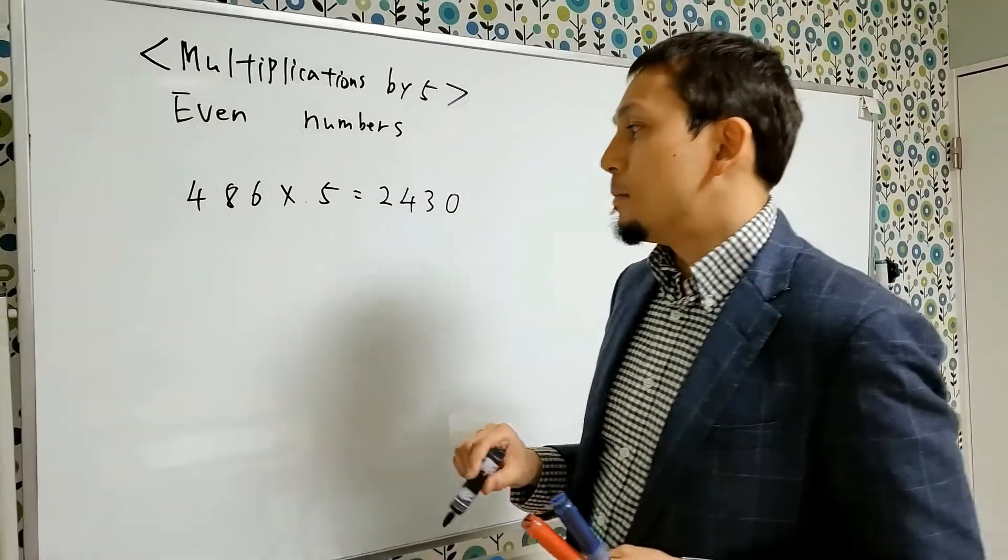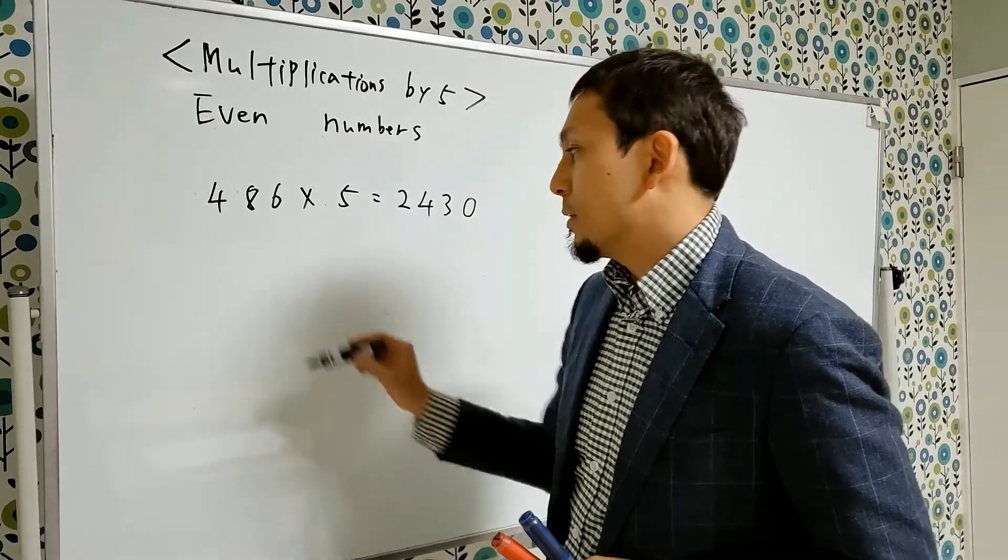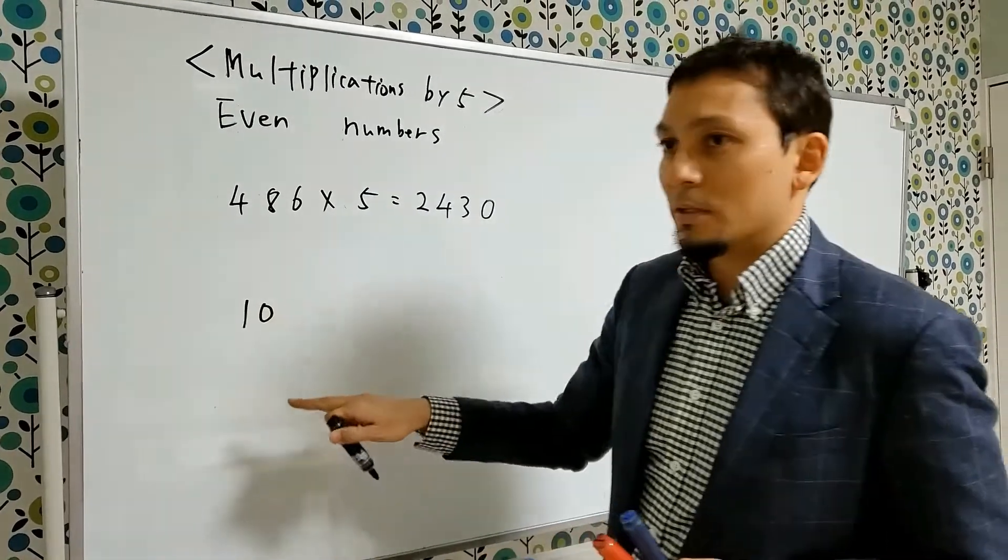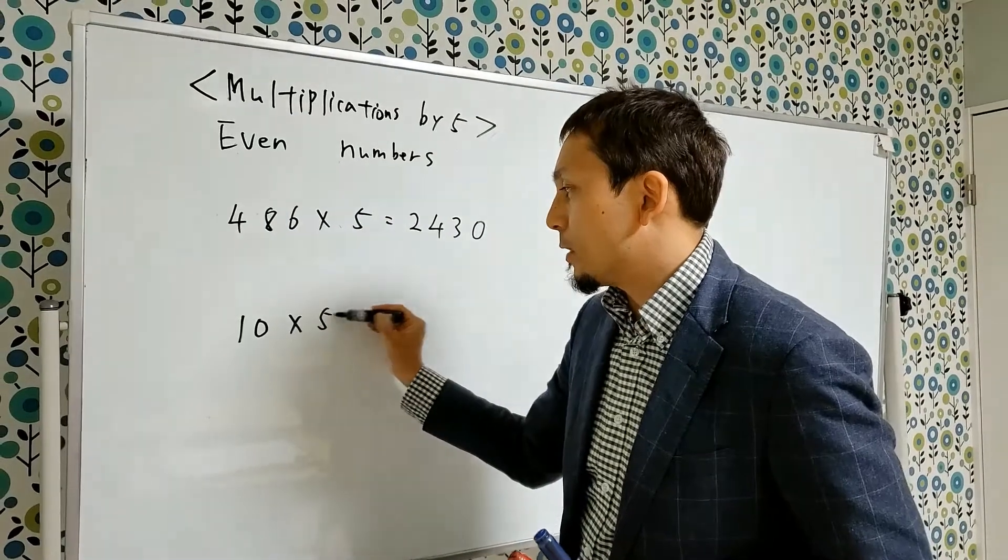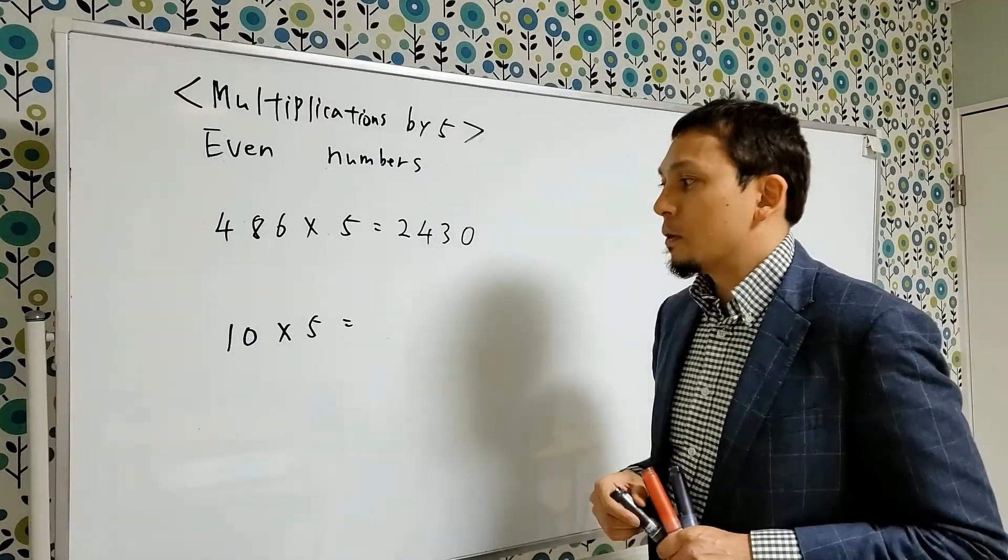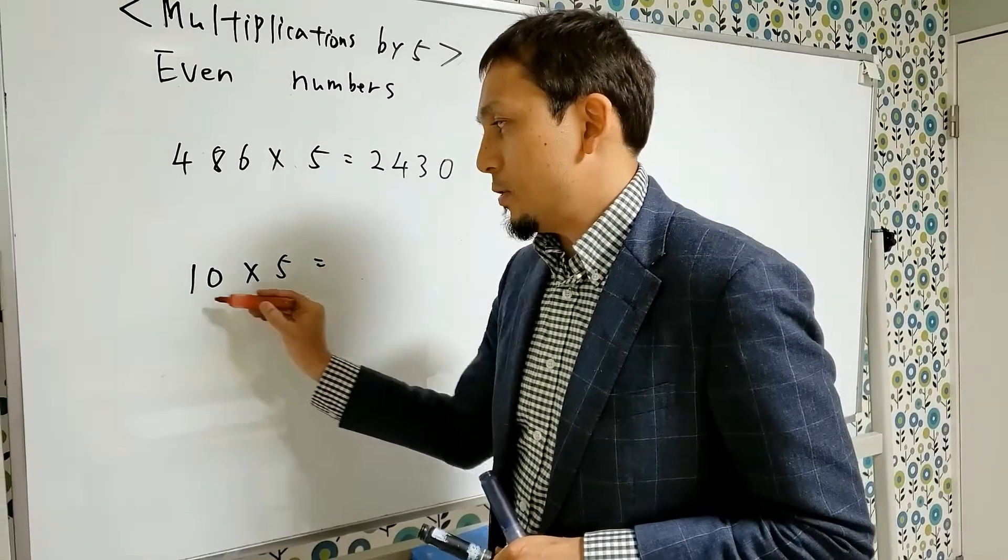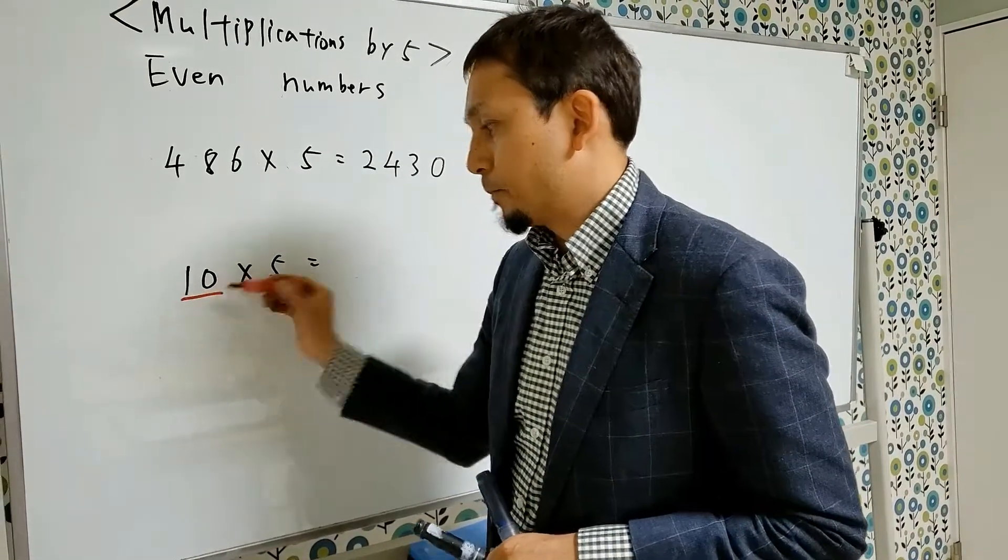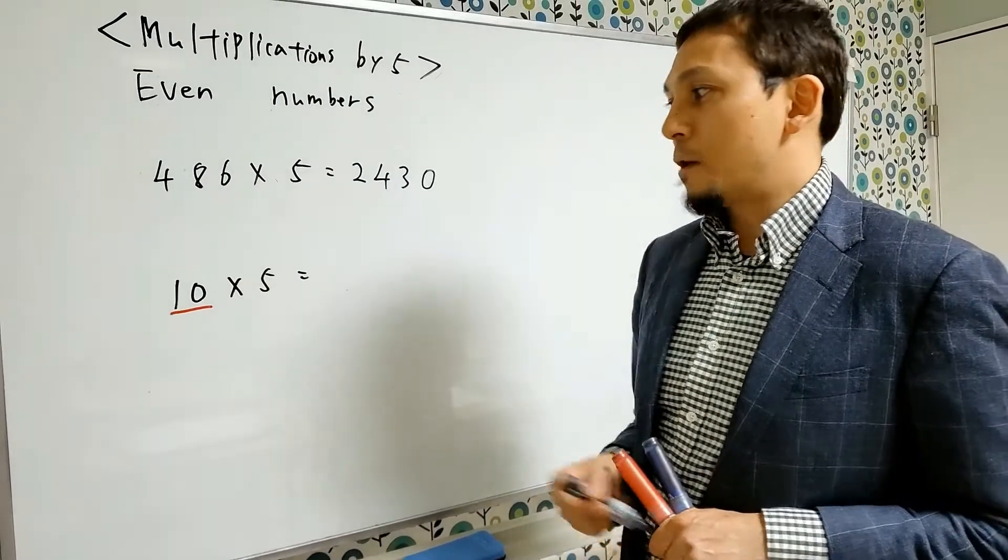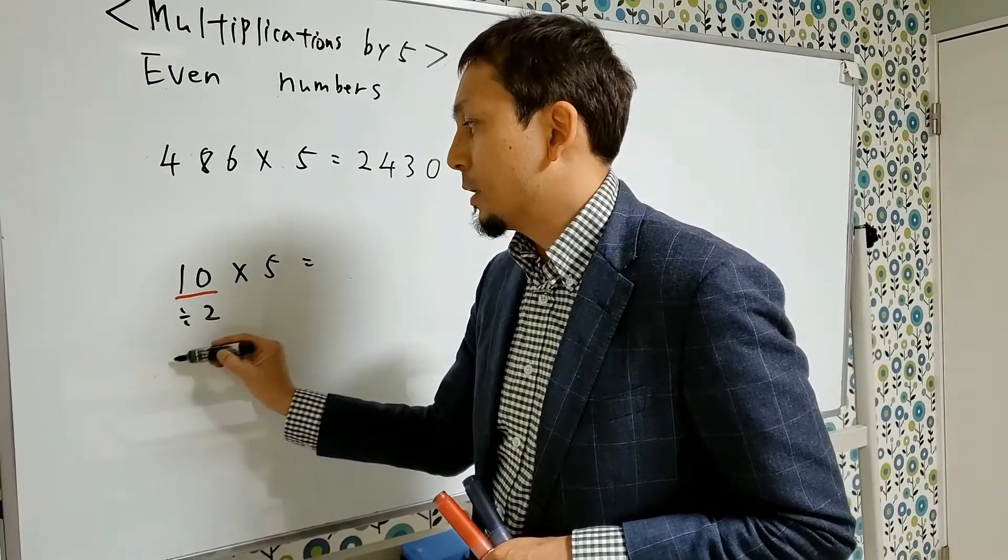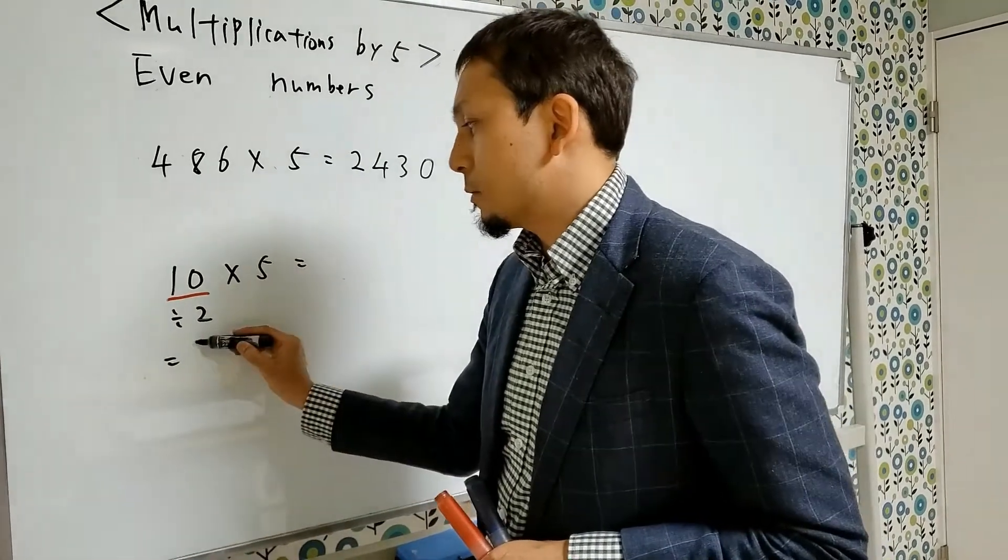But now, let me give a simpler equation. For instance, 10 times 5. Of course, you can do this multiplication very quickly. But this time, let me use a special technique. Okay, the first step is to divide the number 10 by 2. Then you get the result 5.